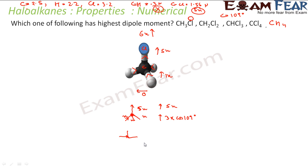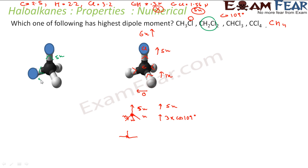So the total dipole for CHCl3 comes out to about 6x in that direction. Now let's look at CH2Cl2. Here we have two chlorines — each pulling with 5x intensity — and two hydrogens, each giving with x intensity toward carbon.